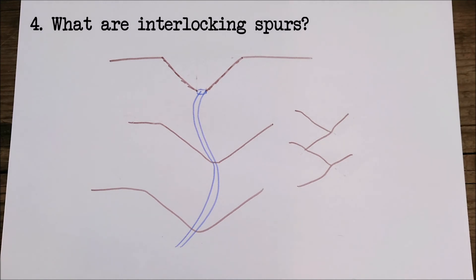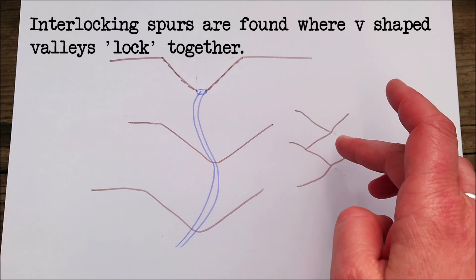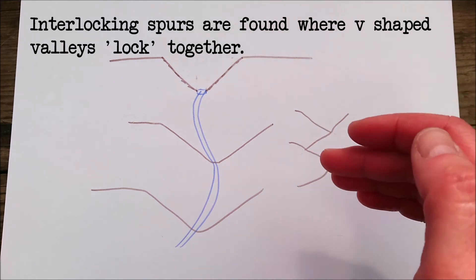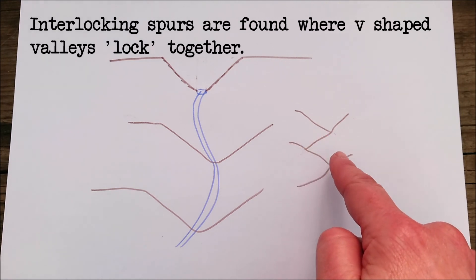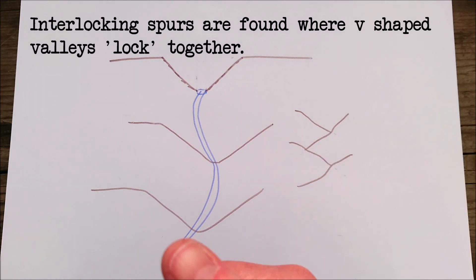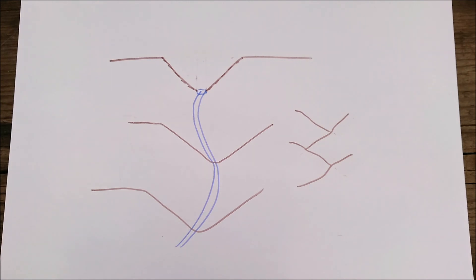Question four: What are interlocking spurs? Well, interlocking spurs are found where V-shaped valleys lock together to form this sort of pattern here. Formed by a windy, slightly meandering river that runs through a V-shaped valley. So I think we've pretty much got V-shaped valleys at that point. Well done.